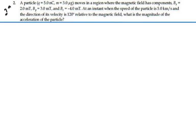Here's 29.2. A particle, 5 nanocoulombs, mass 3 micrograms, moves in the region where the magnetic field has the components BX equal to 2 millitesla, BY equal to 3 millitesla, and BZ equal to negative 4 millitesla. At an instant when the speed of the particle is 5 kilometers per second and the direction of the velocity is 120 degrees relative to the magnetic field, what is the magnitude of the acceleration of the particle?